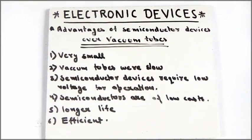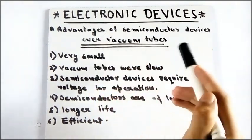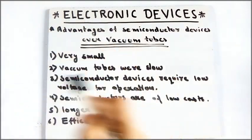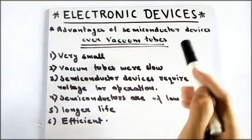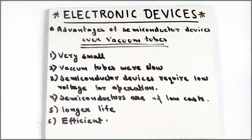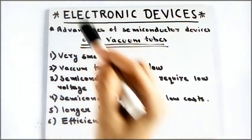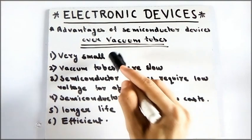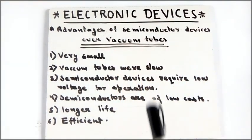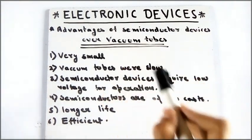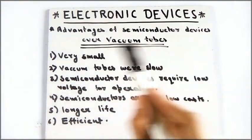The biggest advantage of semiconductor devices over vacuum tubes was that they were very small — really small as compared to vacuum tubes. Due to this they changed the whole electronic industry, and this was the biggest advantage of semiconductor devices. Vacuum tubes were also slow because to run a vacuum tube you have to heat it, and that heating takes some time.